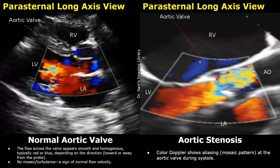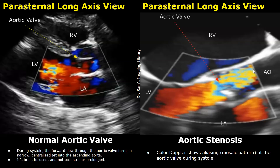We will compare the normal aortic valve image with aortic stenosis. On the left, we have a normal image with color Doppler applied. With the help of color Doppler, we can determine if the blood flow across the aortic valve is normal or disturbed. Normally, the color Doppler will show a single color — either red or blue depending on the probe position — indicating smooth and homogeneous flow across the valve. During systole, the forward flow through the aortic valve forms a narrow, centralized jet into the ascending aorta.